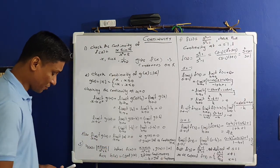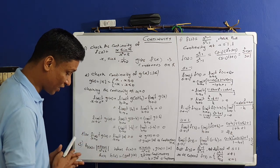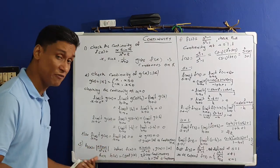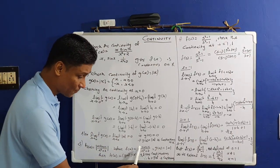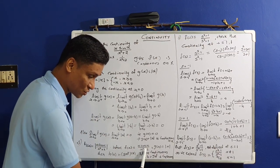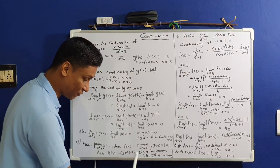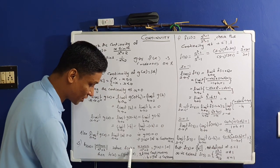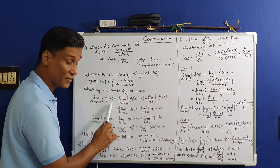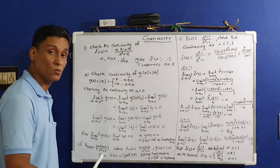Now our third example: define h(x) = |x·sin(x)| / (x²+2). Check the continuity of h(x). This is a combination of many functions. We define f(x) = x·sin(x)/(x²+2) and g(x) = |x|. Then h(x) can be written as g(f(x)).